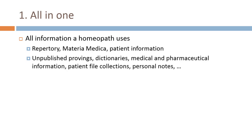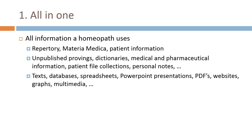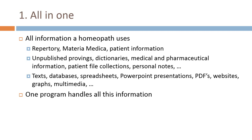In addition, unpublished provings need to be accessed, dictionaries need to be used — medical, pharmaceutical information, patient file collections, personal notes, text, databases, spreadsheets, PowerPoints, PDFs, and websites with homeopathic information. All these types of information would be handled by one and the same program. This was the dream: to make it a one-stop place for whatever a homeopath needs in practice.